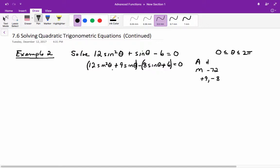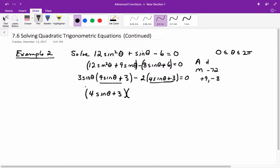Common factor each of the groups. For the first group, 3 sine theta is common. That's going to leave you with 4 sine theta plus 3. And the other one, you're going to be able to take out a 2. And once again, that leaves you with 4 sine theta plus 3 equals 0. As you can see, the 4 sine theta plus 3 is common, so bring that up in front.